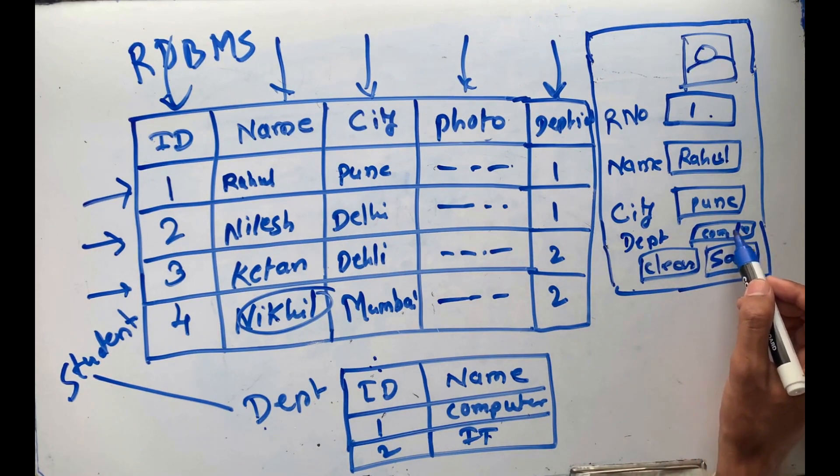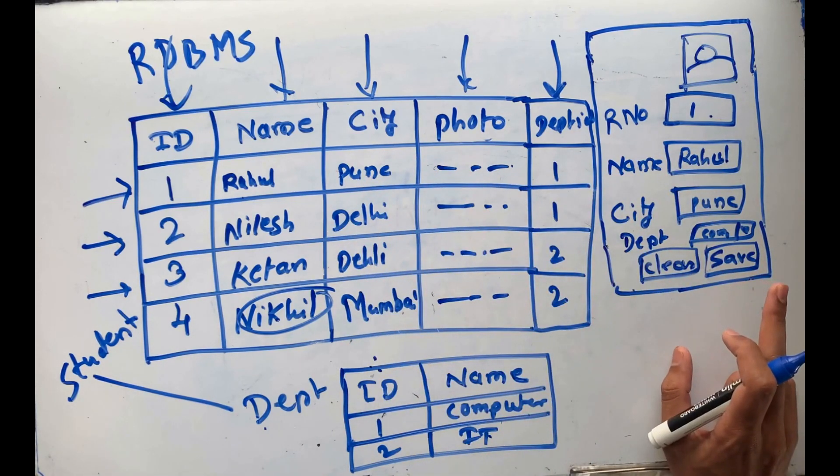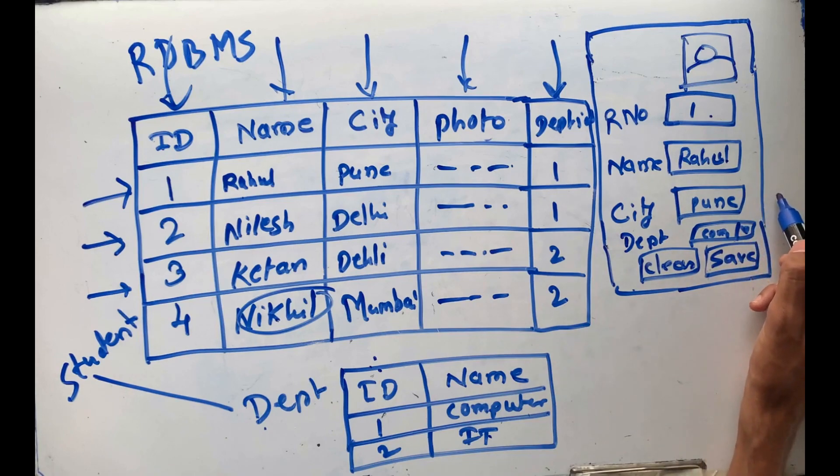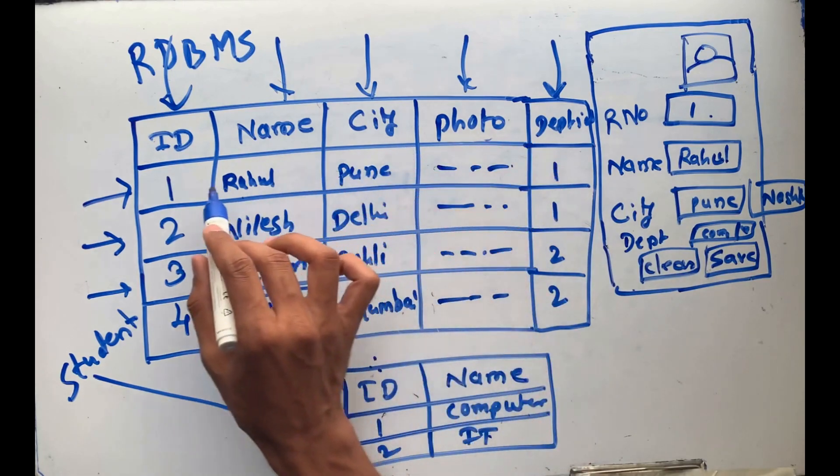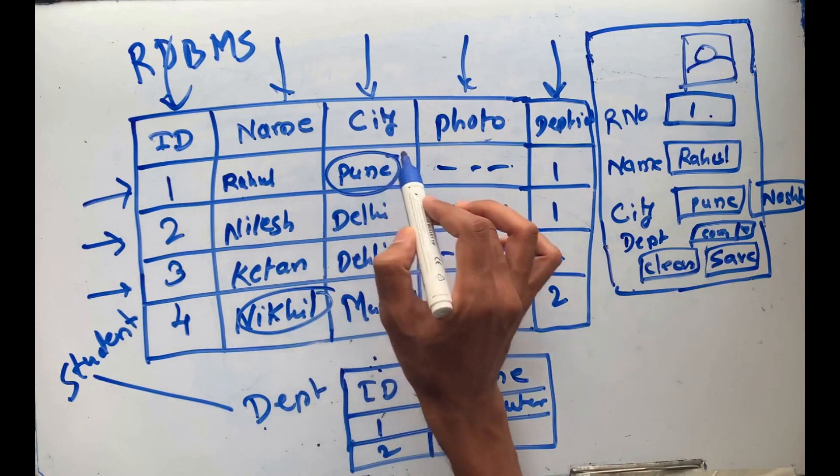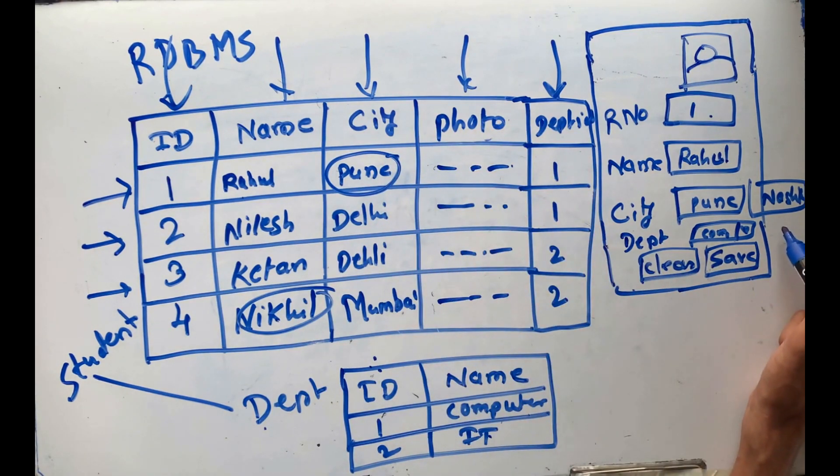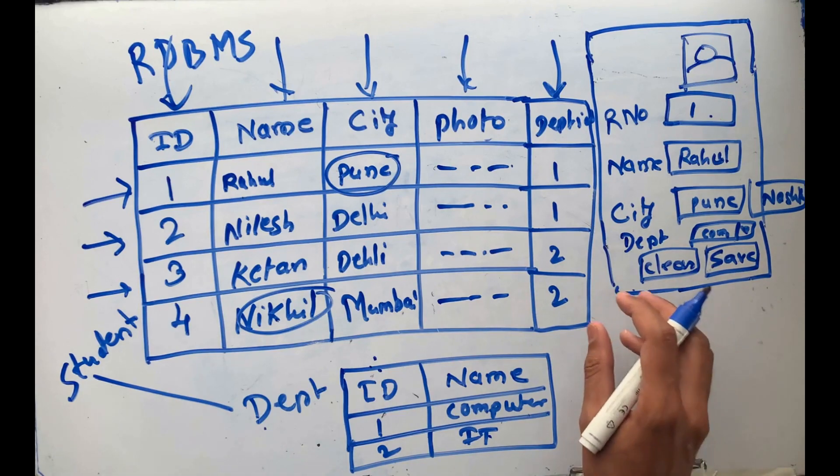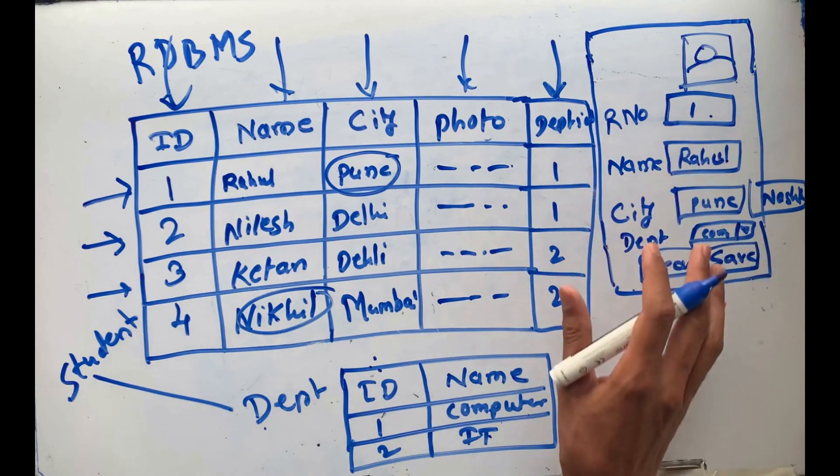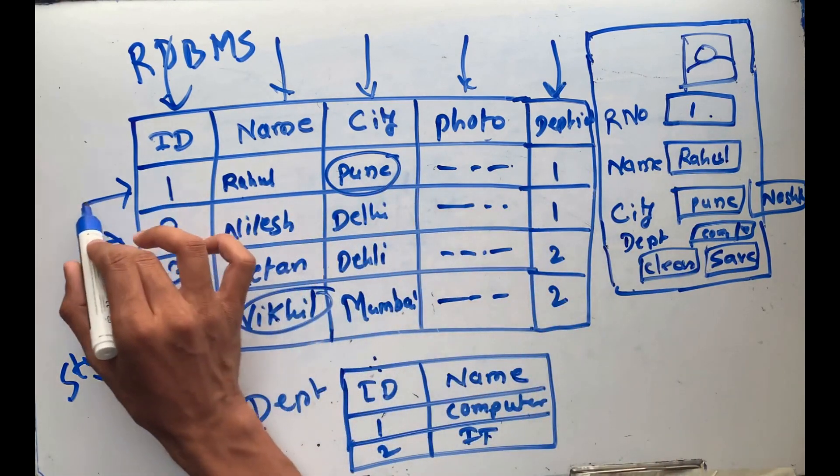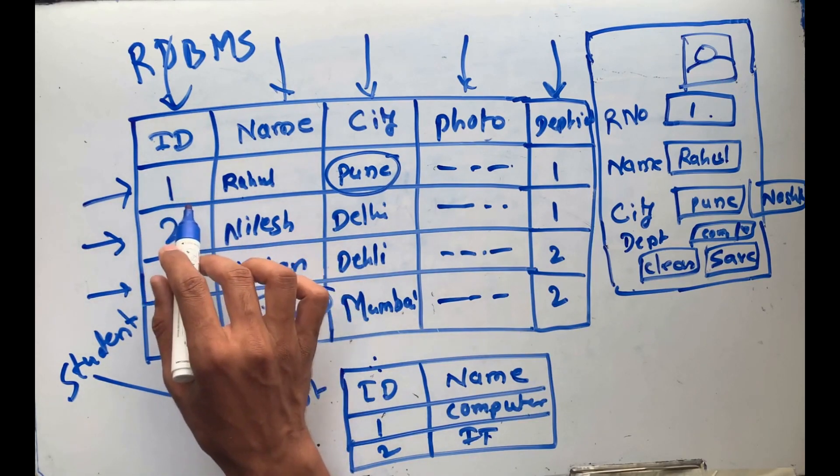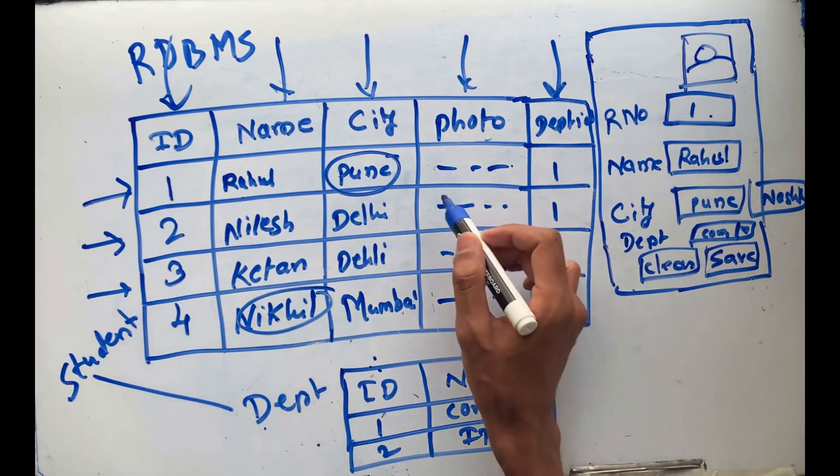We select based on ID and data is saved into the database. If I have to alter, then Pune becomes Nasik or something like that. That information is updated with the help of an update query. We can simply update that particular record - Rahul's city is going to be updated from Pune to Nasik. The third thing is delete. If that student is not needed, we can directly delete that particular row from the database.